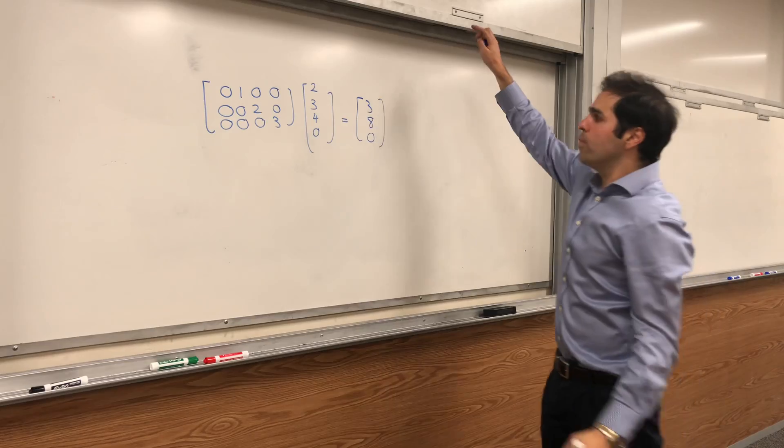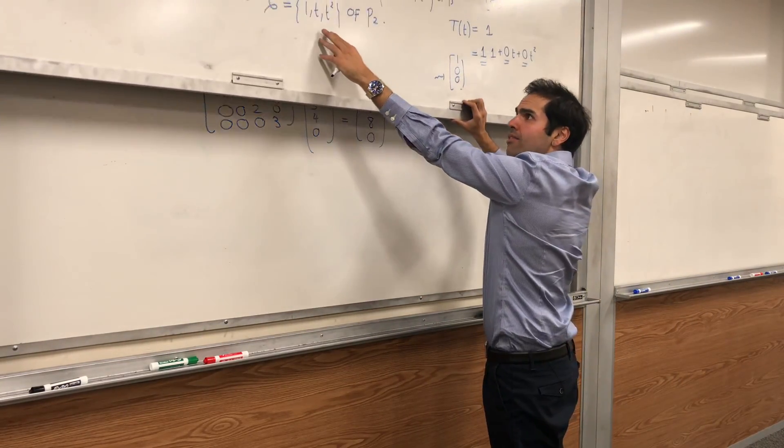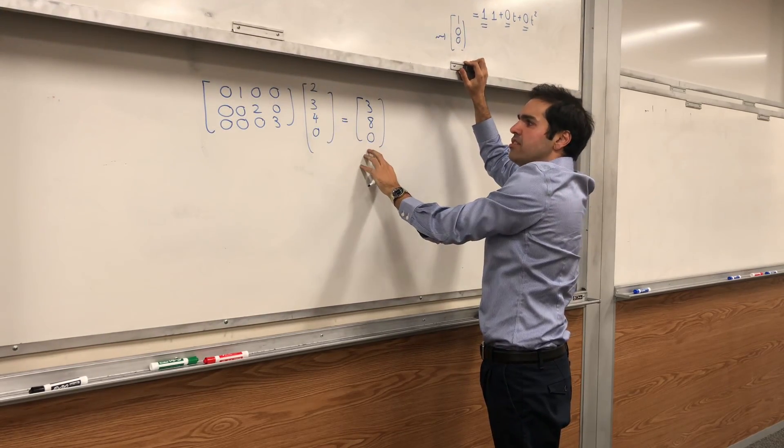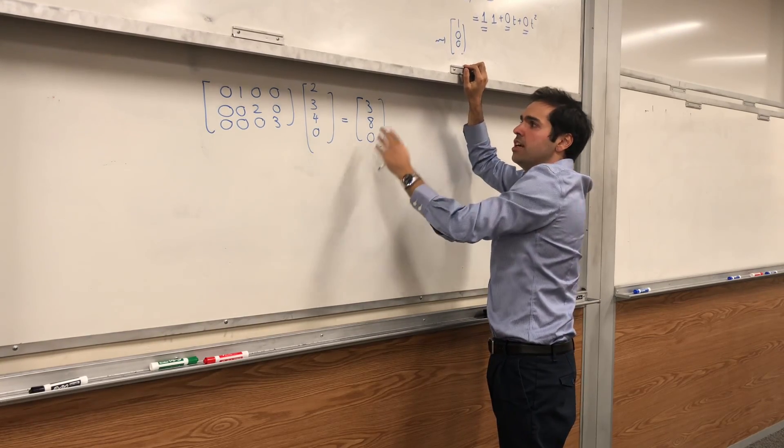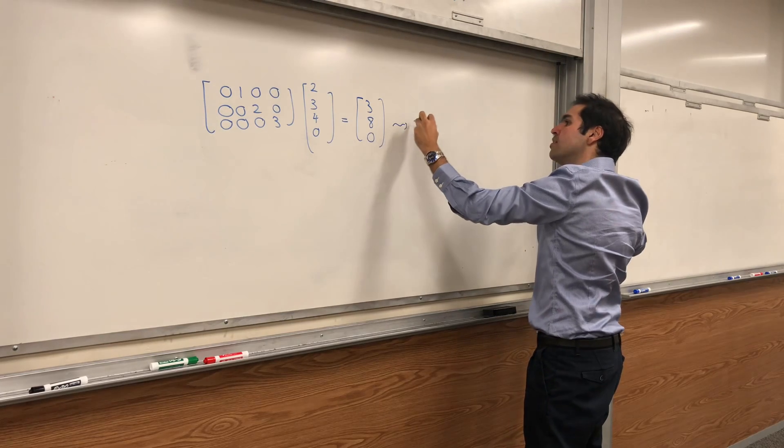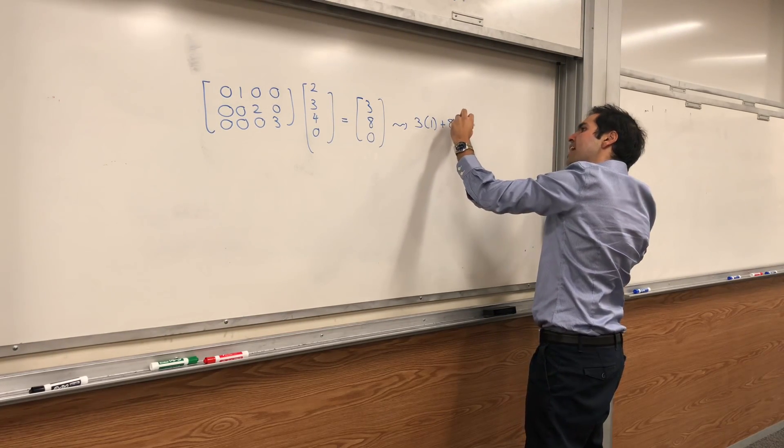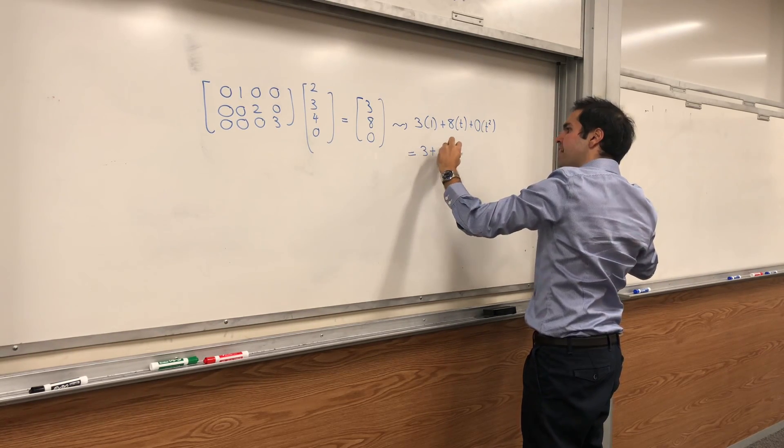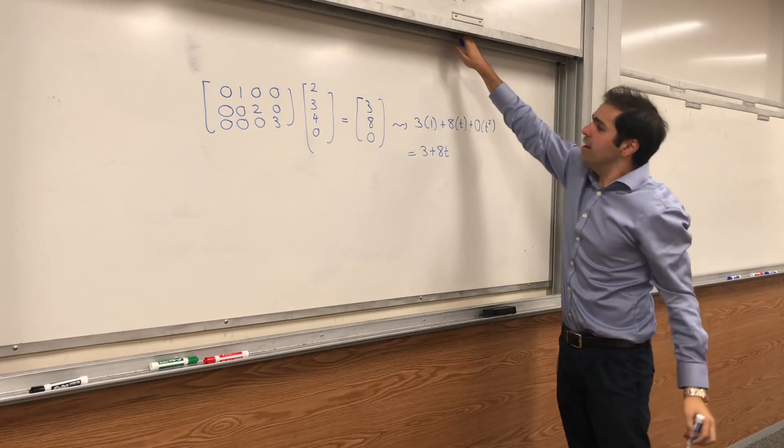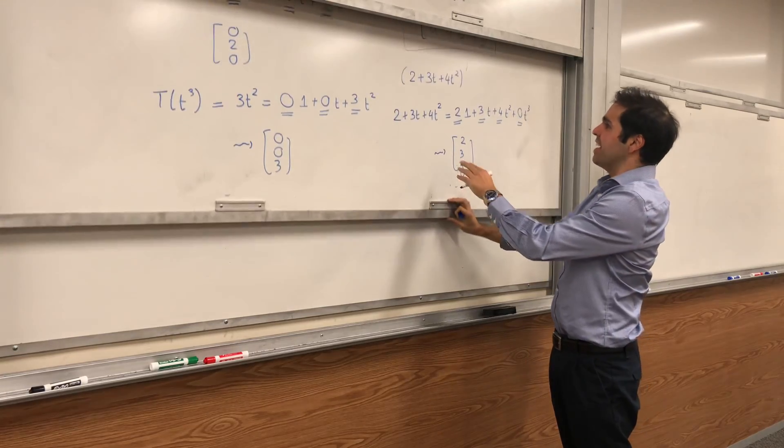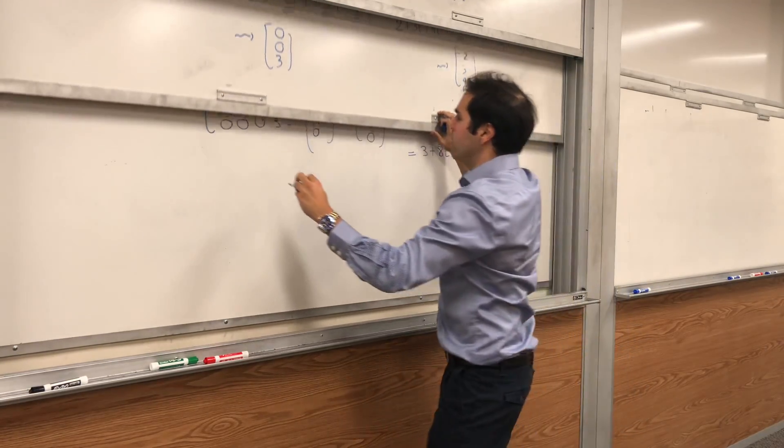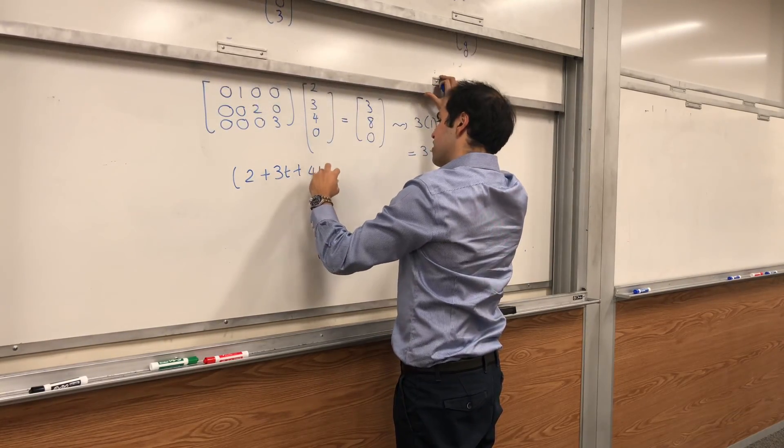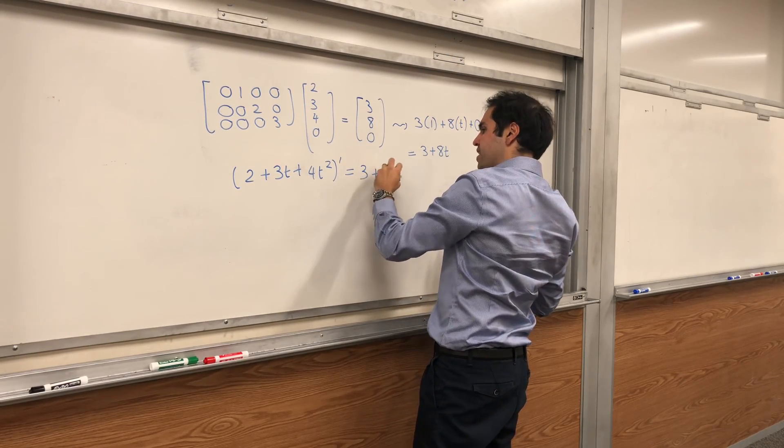Now, we need to take this vector and figure out which vector in P2 this corresponds to. So this tells us the coordinates of your polynomial with respect to c. Well, it's just 3 times 1 plus 8 times t plus 0 times t squared, which is 3 plus 8t. So, let's check. Is the derivative of 2 plus 3t plus 4t squared equal to 3 plus 8t? Yes, indeed it is.